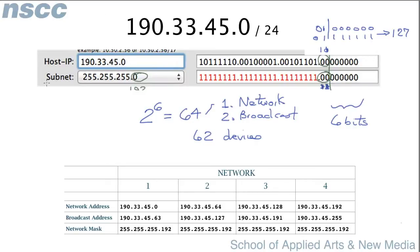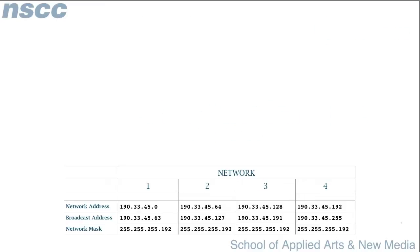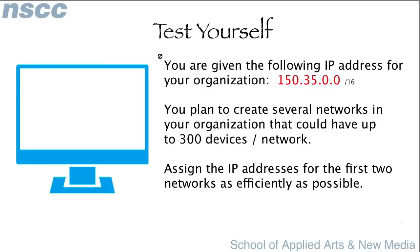So let's see how you do on another example. For this example, like the other tutorials, you can just pause it. Basically you are given this address 150.35.0.0/16 and you have to create as efficiently as possible networks that can create up to 300 devices per network. What I want you to do is assign the IP address for just the first two of those networks. Pause now and then we'll continue for the answer.